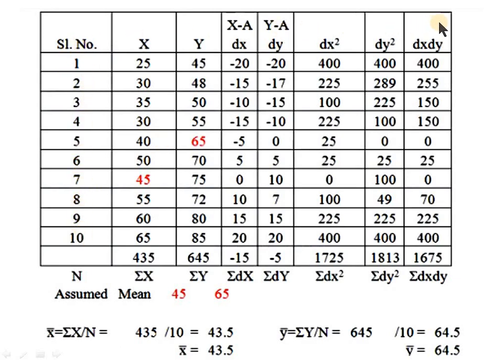Now we set up the table. The first column is x, the next column is y, then the next column is dx (small dx), followed by dy, dx², dy², and dx·dy.